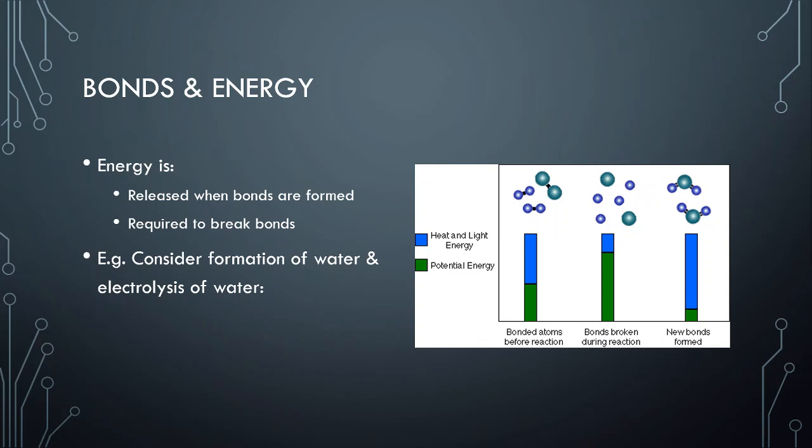If you want to go back, you would need to add electricity. That's electrolysis. You add electricity to break the bonds here to produce oxygen and hydrogen.